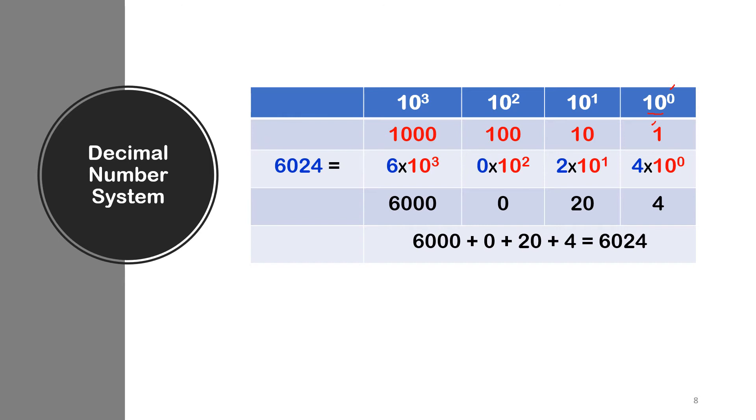Now the next position which is 1, position 1, 10 to the power of 1 is 10. In position 2, 10 to the power of 2 is 100. And then position 3, 10 to the power of 3 is 1000.